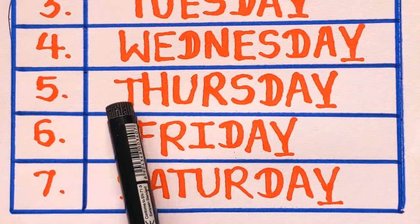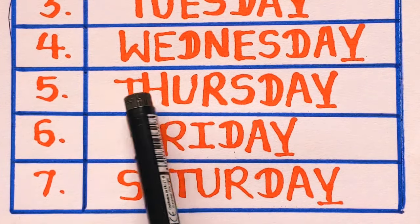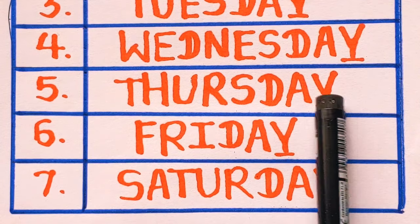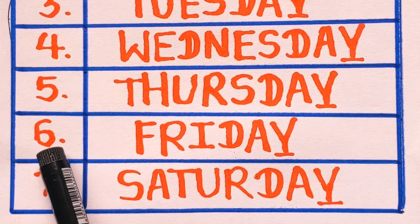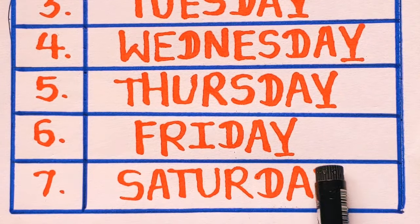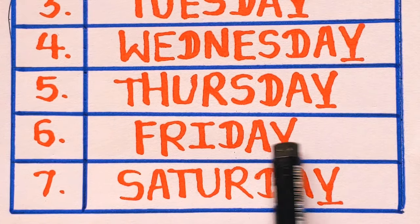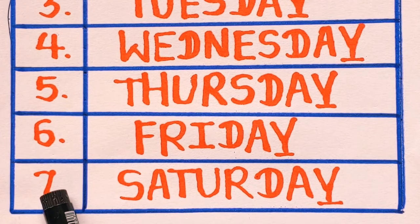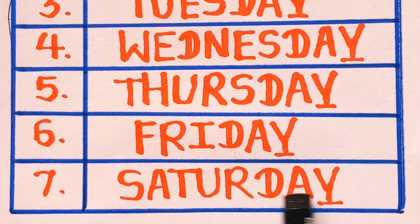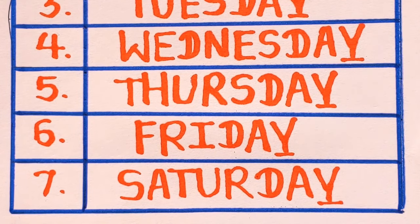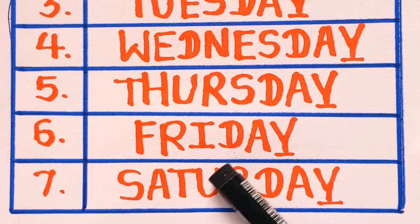Next is number 5, Thursday. T, H, U, R, S, D, A, Y. Thursday. Number 6, Friday. F, R, I, D, A, Y. Friday. And number 7, Saturday. S, A, T, U, R, D, A, Y. Saturday. These are the 7 days of the week.